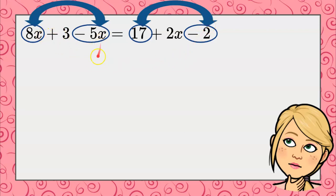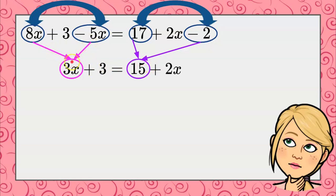So 8x and negative 5x are 3x, and then 17 and negative 2 are 15. So we combined our variable terms that are alike on the left for 3x, and we still have our plus 3. 17 subtract 2 is 15, and we still have our add 2x.